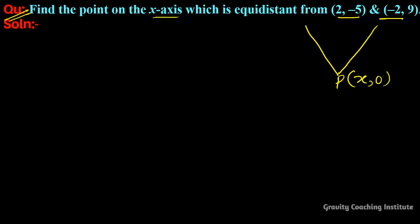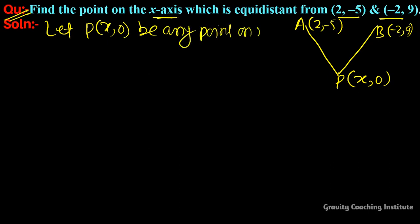On the x-axis, the y-coordinate is always 0. The points are A(2, -5) and B(-2, 9). Let P(x, 0) be any point on the x-axis. According to the question, the point is equidistant, so AP = BP.